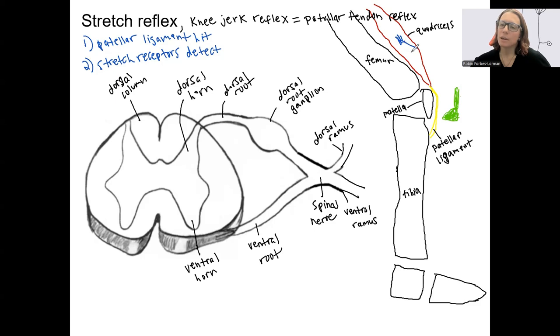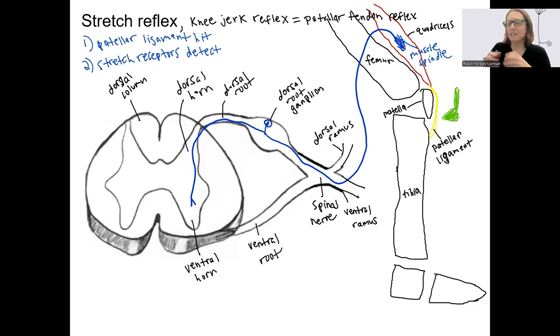So this is a muscle spindle. Actually, I have an animation here. Let's see if that's going to... Nope. That works. The muscle spindle is going to detect stretch. When the hammer hits the ligament, it causes the entire muscle to stretch. So the muscle spindle is a sensory receptor that detects that.